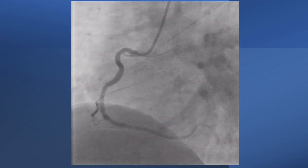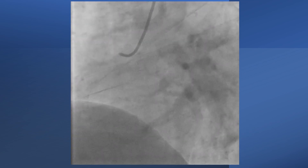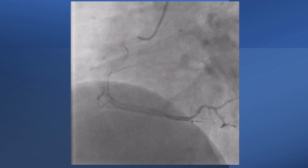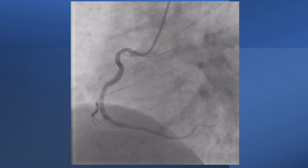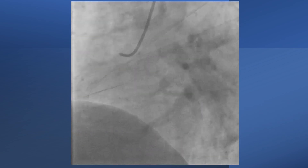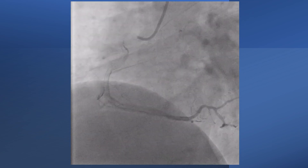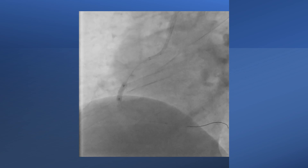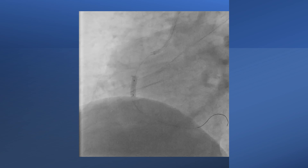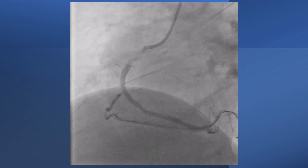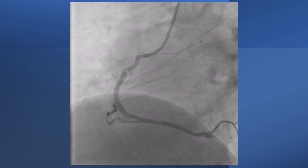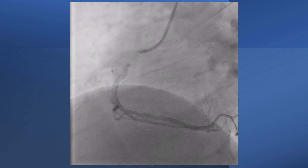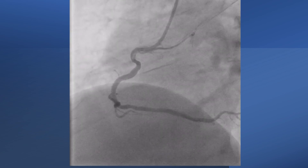In our case, the stent was deployed and we removed everything — the wire and the balloon — and everything returned to normal. We even changed the guiding catheter to the JR right. But we needed to post-dilate the stent, so we went back with the wire and post-dilated the stent and got exactly the same effect. Again, this effect was released by removing the wire.